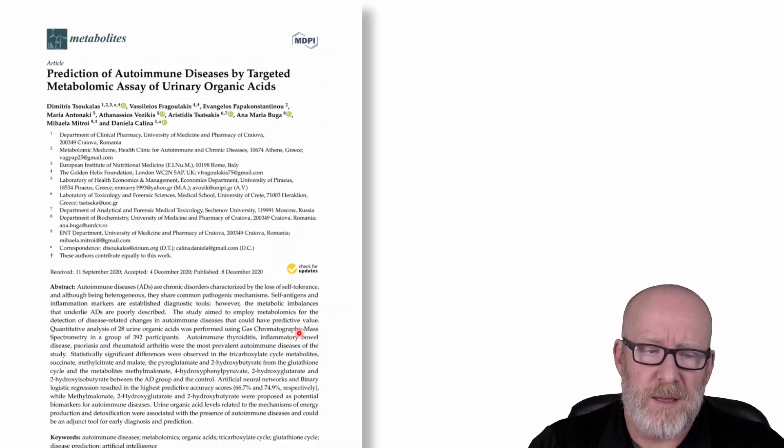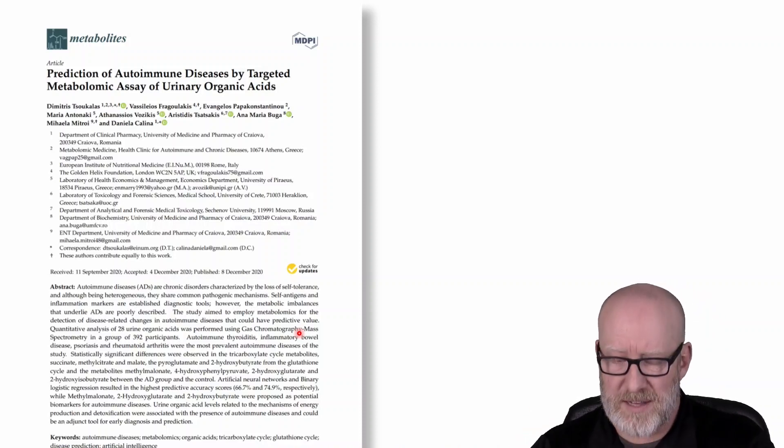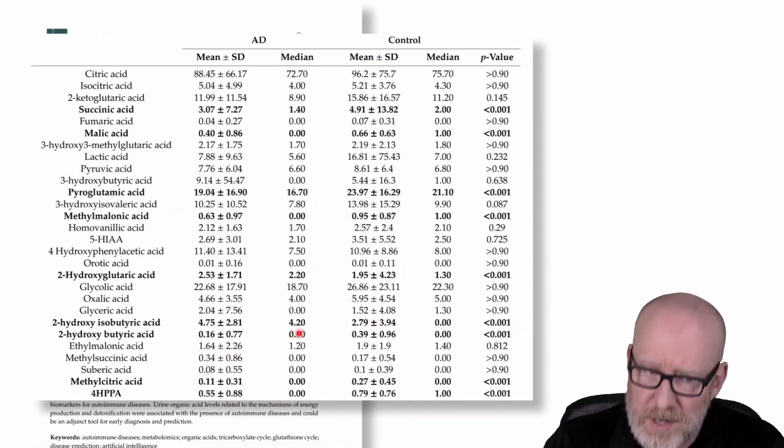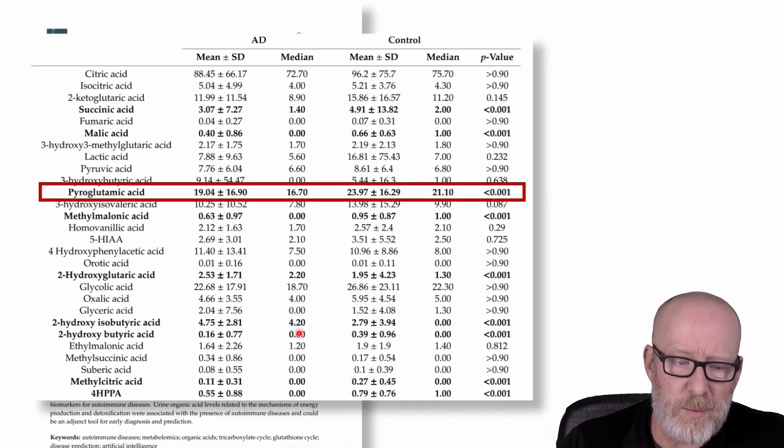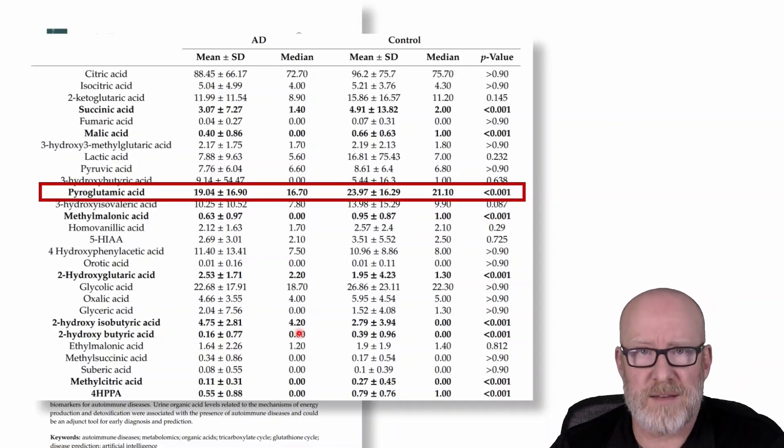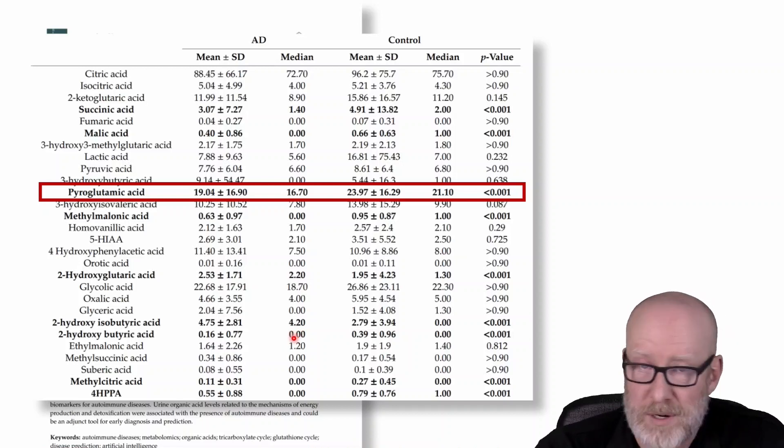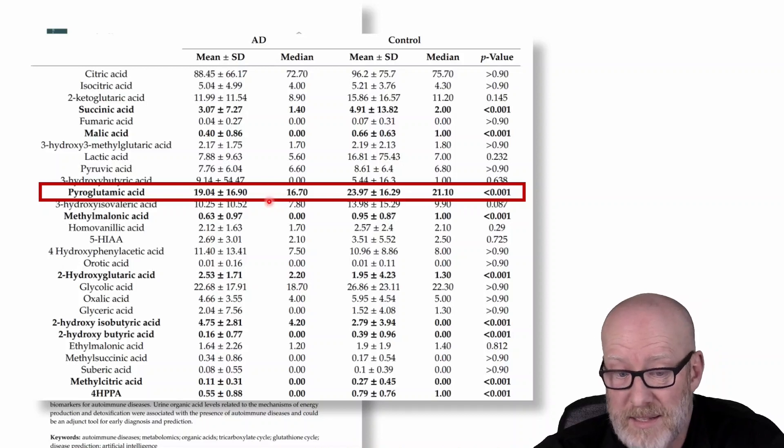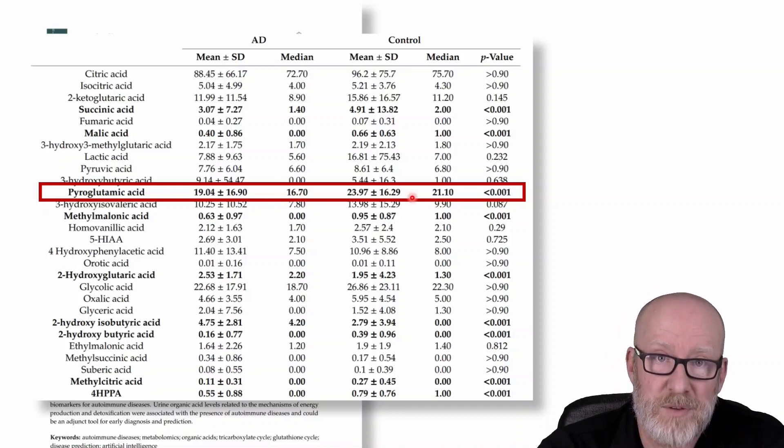This paper looked at prediction of autoimmune diseases using organic acid metabolites. Fantastic. Well, let's take a quick look at this. We're not going to look at all the other markers, but specifically, we're interested in pyroglutamic acid as a marker of glutathione, according to these labs and experts. But when I take a look at this, first of all, there's not a lot of difference. The median is 21 and over here it's 16. And then when you look at the mean of 19 and 23, there is not a whole, statistically, they said it was significant, but I'll tell you clinically, that's not very different. That's just a matter of a few points.